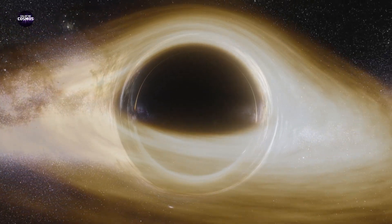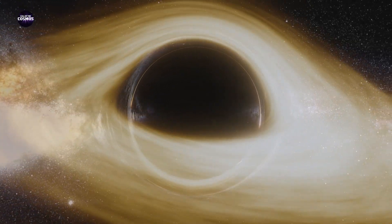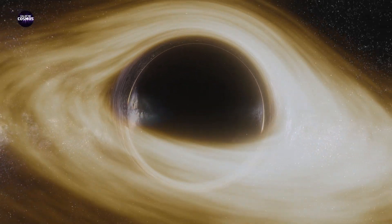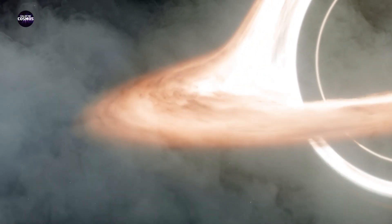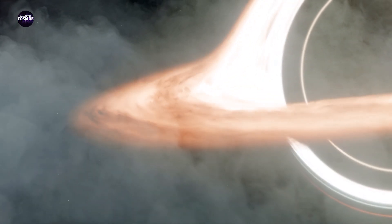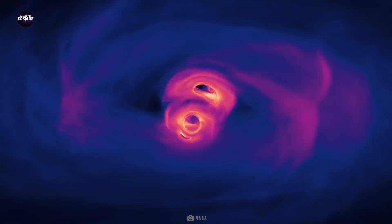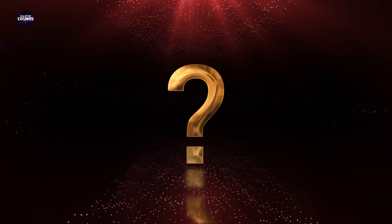Black holes can either form by accreting or accumulating matter, or by the merger of other black holes. A few supermassive black holes accrete the hot gas surrounding them at superfast rates as they spin. Can such supermassive black holes collide? And if they do, what will be the final outcome?